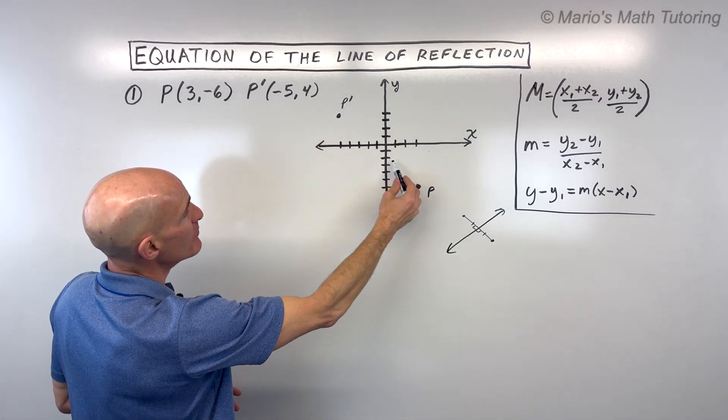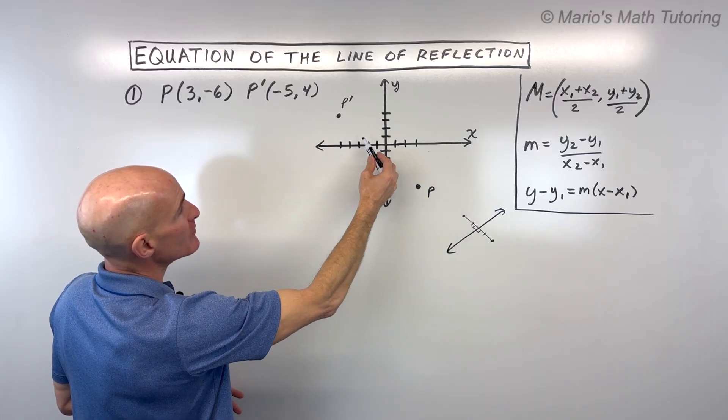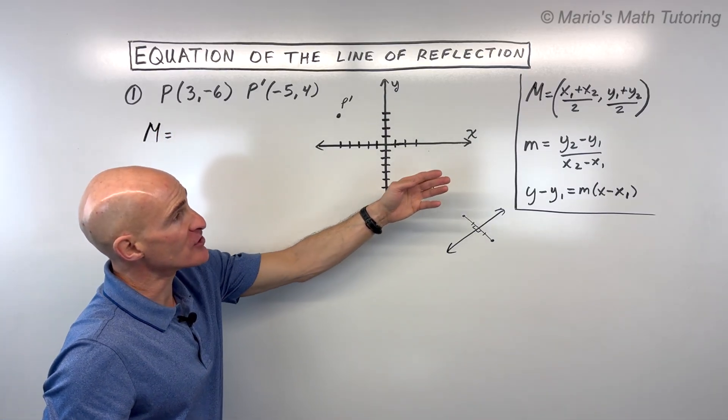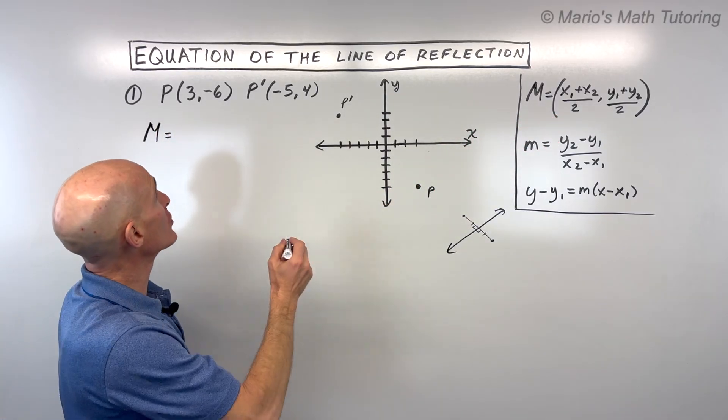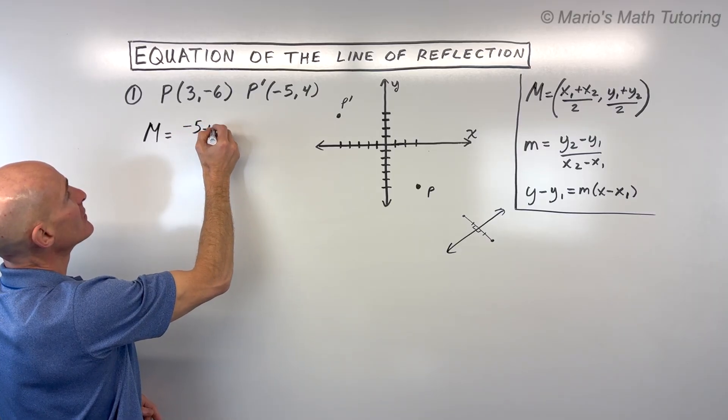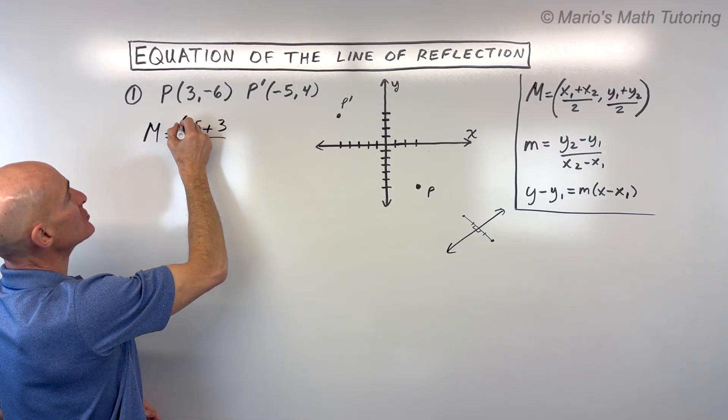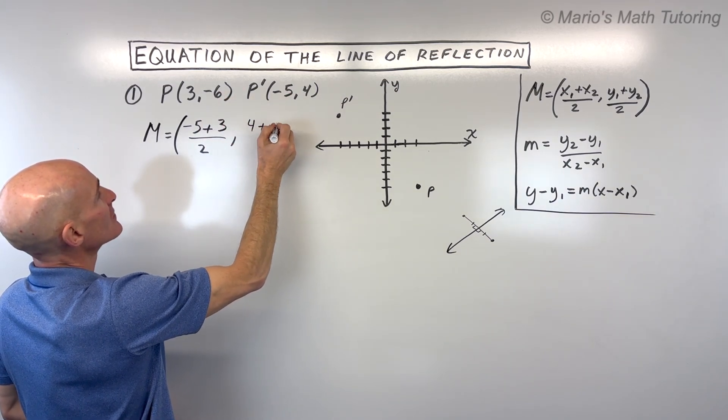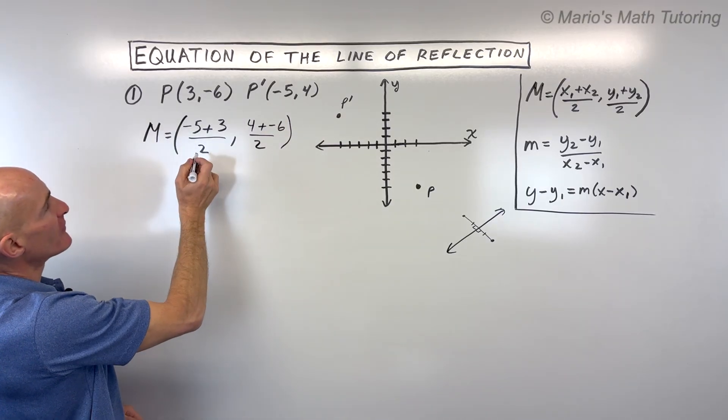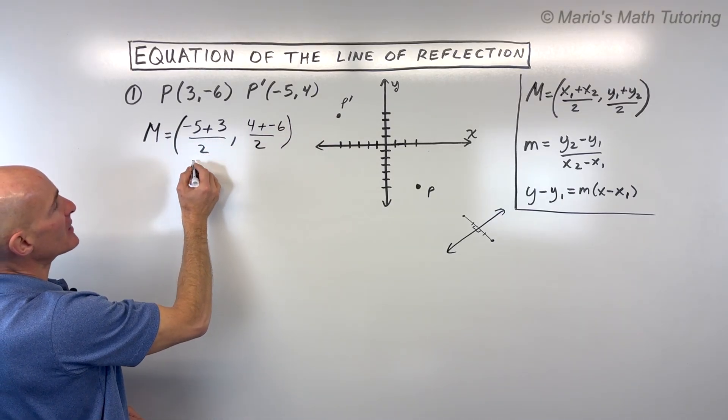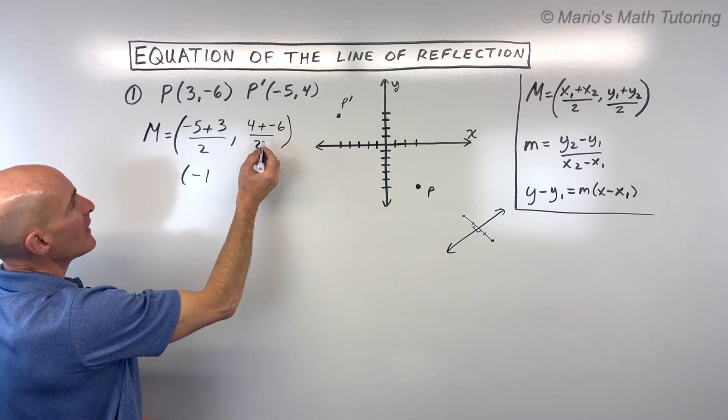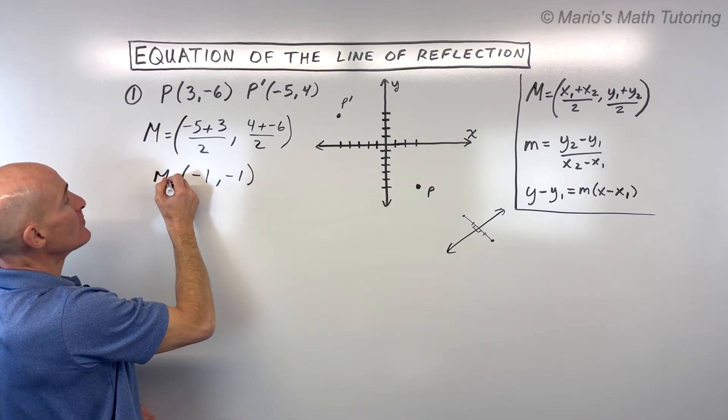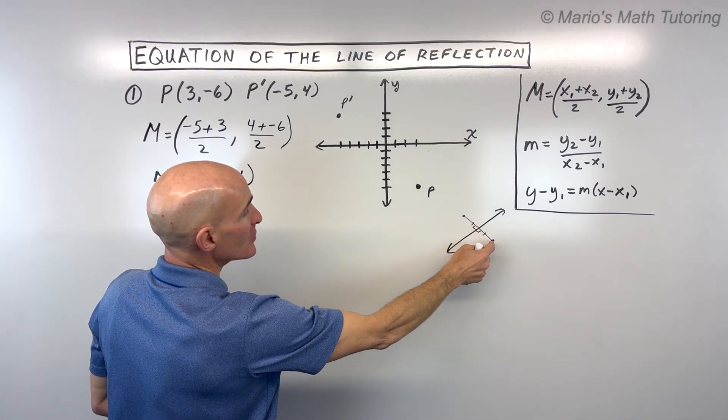So the first thing we're going to do is we're going to find the midpoint between P and P'. So the way that we do that is we average the x's and we average the y's. So we're going to add the two x coordinates together. So this is going to be negative 5 plus 3 divided by 2. Same thing with the y's. 4 plus negative 6 divided by 2. Let's simplify. This comes out to negative 2 divided by 2, which is negative 1. And over here we get negative 2 divided by 2, which is also negative 1. So that's our midpoint. That's our halfway point here between these two points.